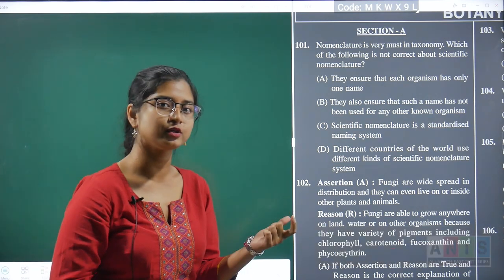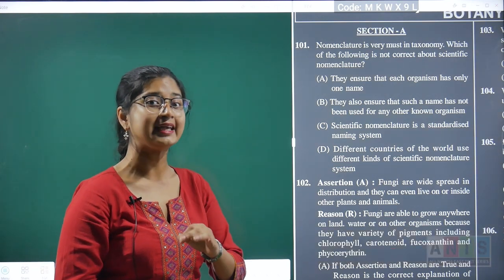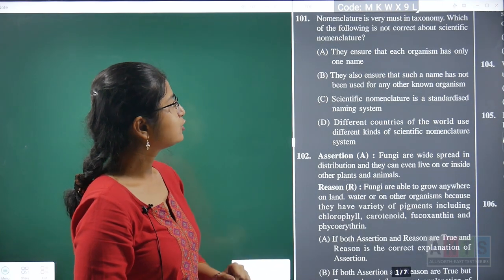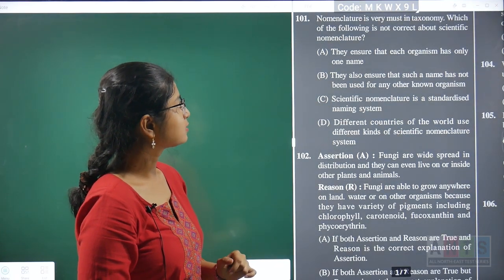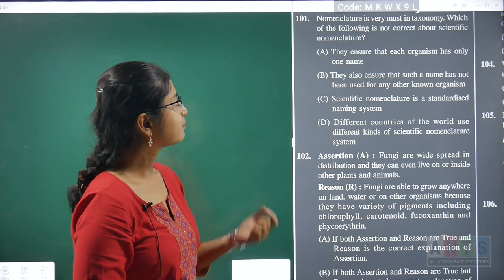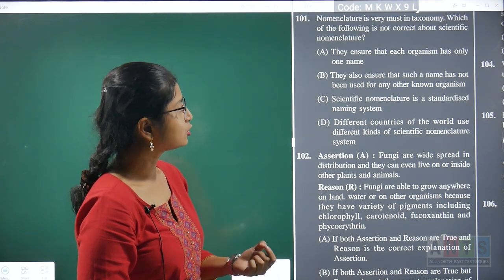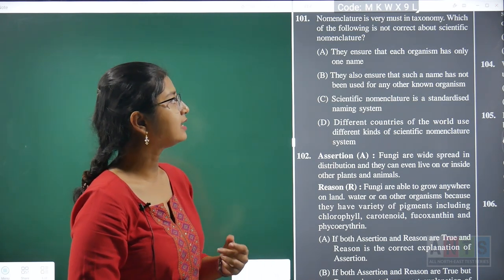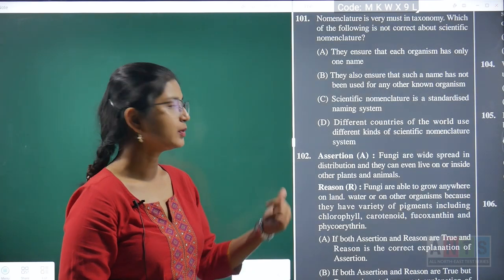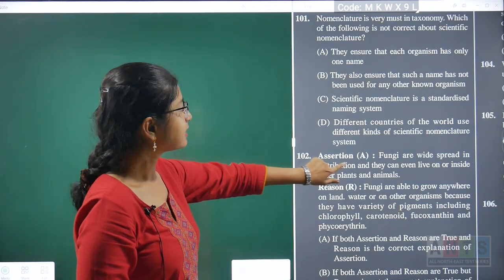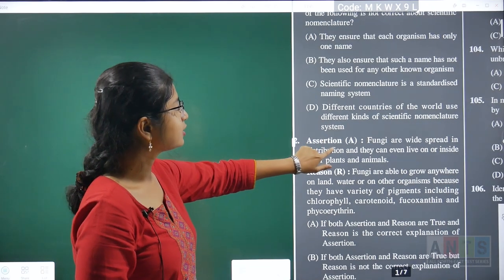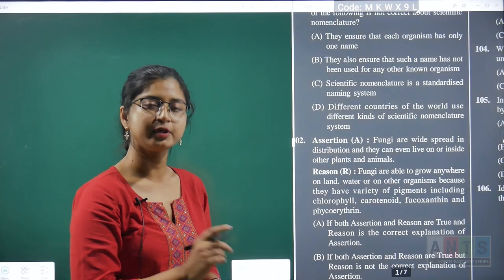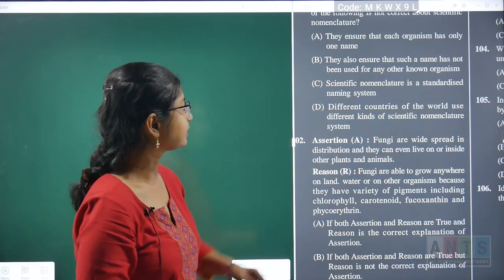In this question, we are asked about which is the incorrect statement. They ensure that each organism has only one name — this is correct. They also ensure that such a name has not been used for any other known organism — this is also correct. Scientific nomenclature is a standardized naming system — this statement also seems to be correct.